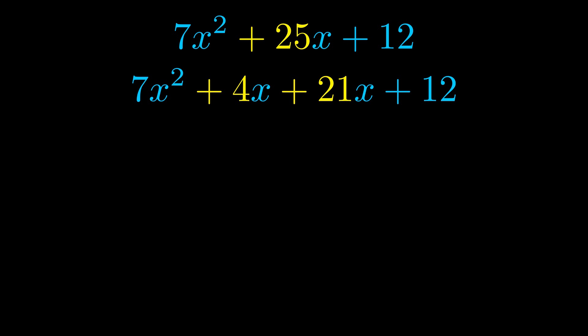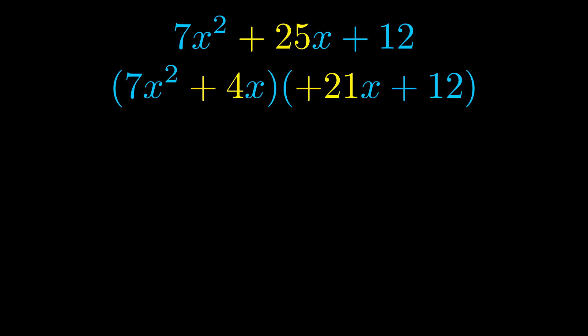Once we've done this we go ahead and we put parentheses around the first term and the last term, and we do that so that we can take the greatest common factor out of both terms. We can see the greatest common factor is now outside in green.